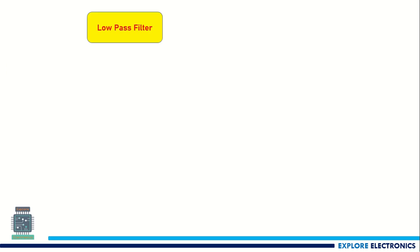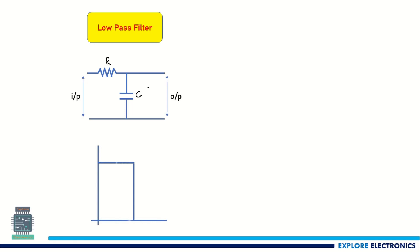Let us understand a low-pass filter. A low-pass filter is just an RC circuit — we have one resistor and one capacitor connected like this. We apply the input to the RC circuit and take the output across the capacitor.